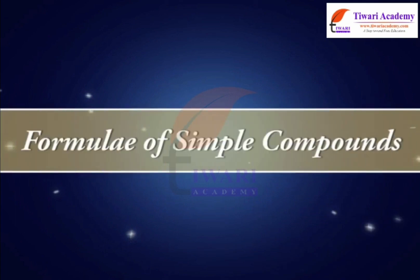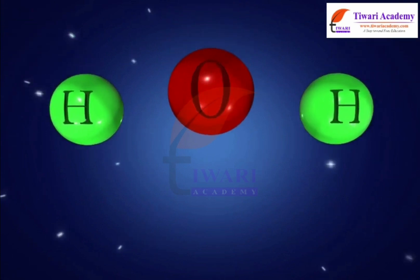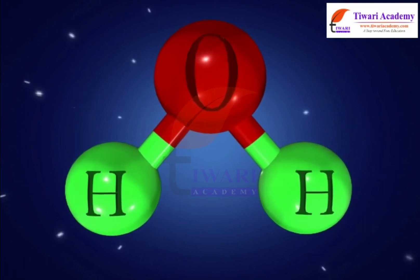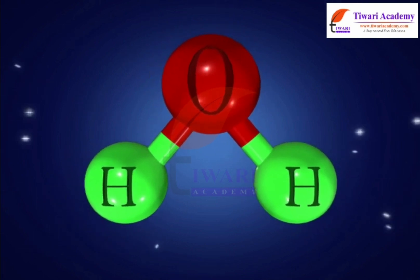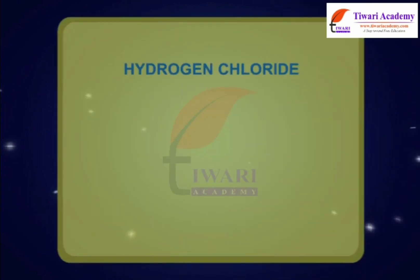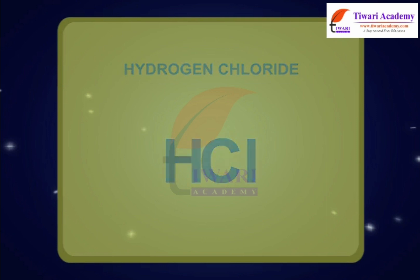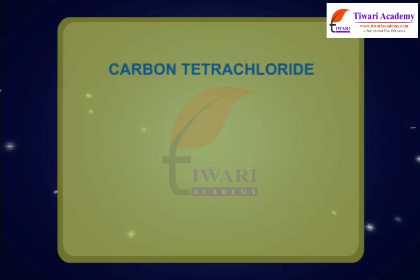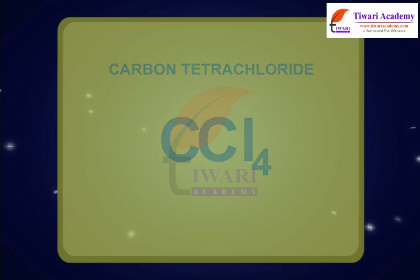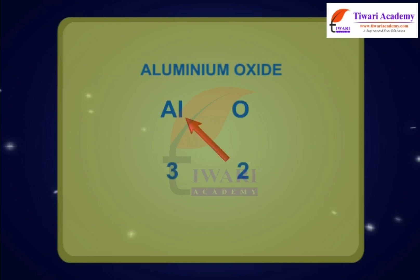Formulae of simple compounds. The simplest compounds made up of two different elements are called binary compounds. While writing the chemical formulae for compounds, we write the constituent elements and their valencies. Examples: hydrogen chloride (HCl), hydrogen sulfide (H₂S), carbon tetrachloride (CCl₄), aluminium oxide (Al₂O₃).